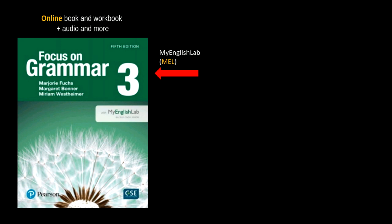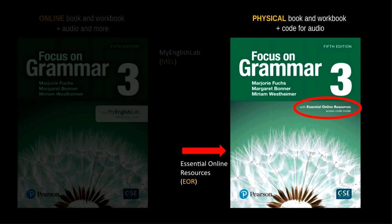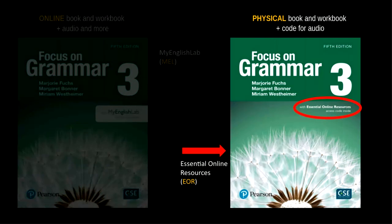The other option, which may be harder to get now, is Focus on Grammar 3, 5th edition, with the essential online resources. These are the audio and a few other things for you to use when you buy this book and the physical workbook. I prefer this because I get to keep it and there are some very good resources in every unit and at the back of the book. I will send instructions, and there are instructions on the website for ordering either one from the publisher, which is a lot cheaper than trying to find it elsewhere.